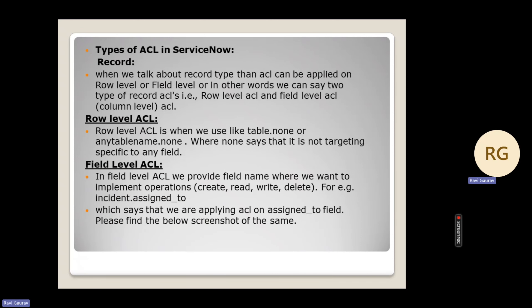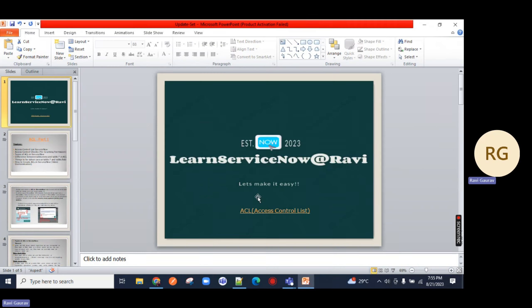We have types of ACLs in ServiceNow. There are a lot of types, but the most prominent one is record. Then you have field level, and then you have rule level. I'm not going to tell you the definition because it's just bookish language - I will show you what rule level and field level are with the help of a demo. Let's go back to the video demo.